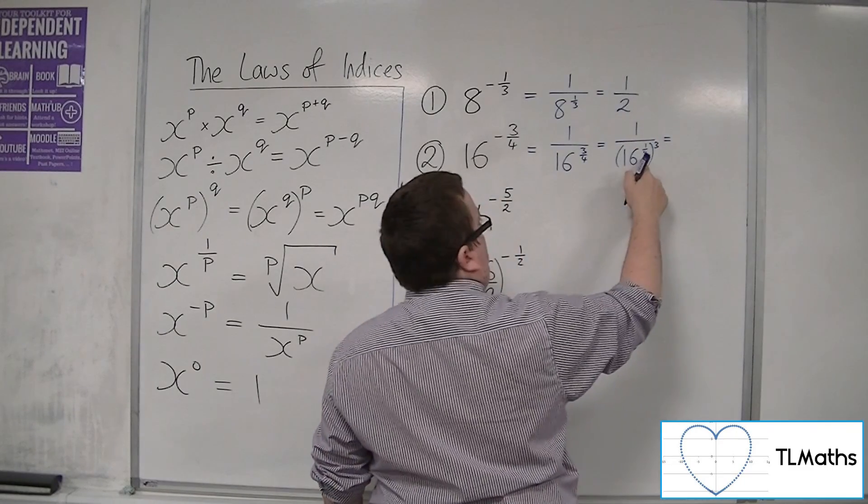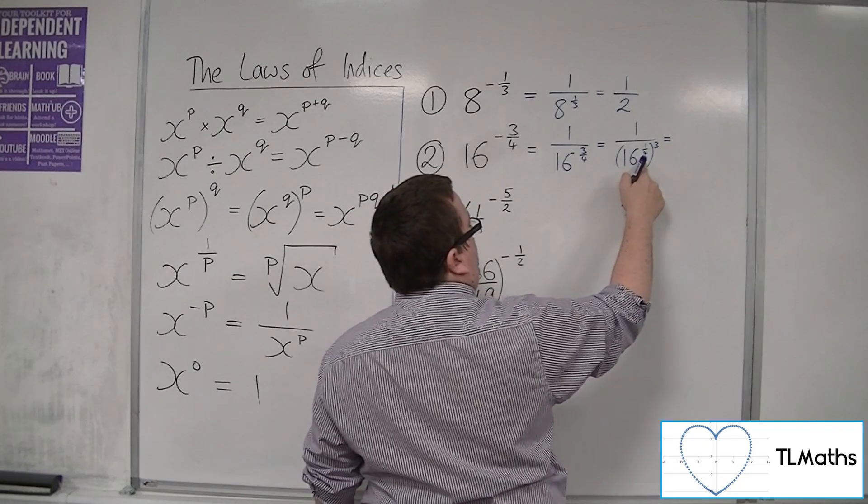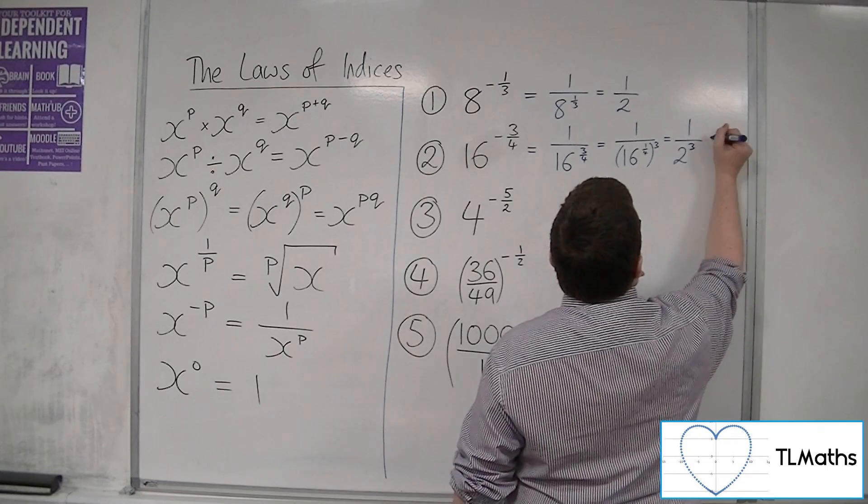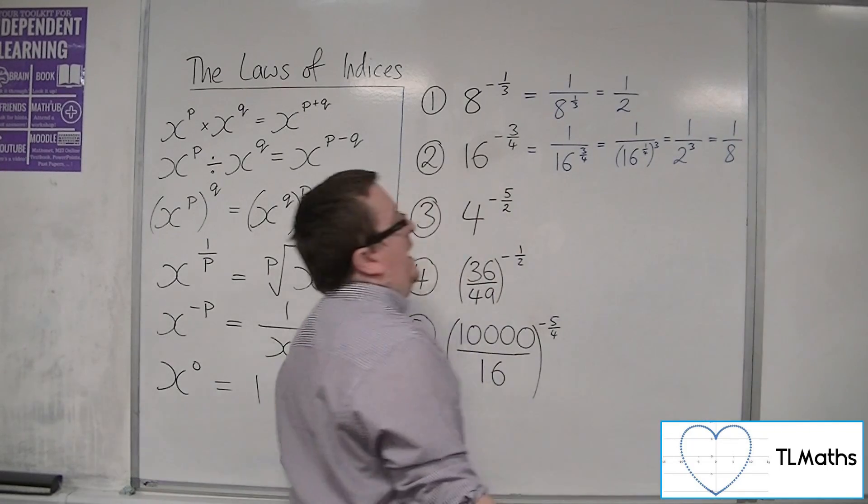Now 16 to the quarter is 2. The 4th root of 16 is 2. So this is 1 over 2 cubed. And 2 cubed is just 8. So this is 1 eighth.